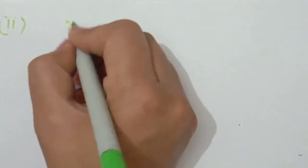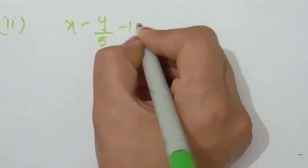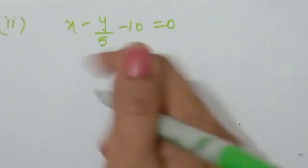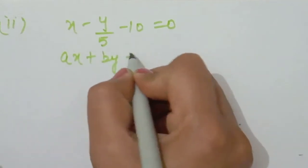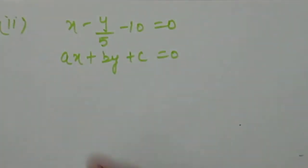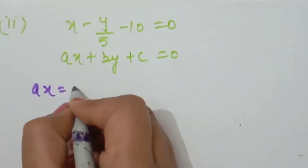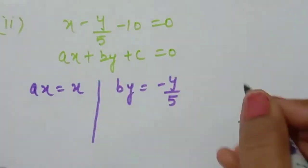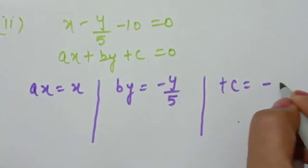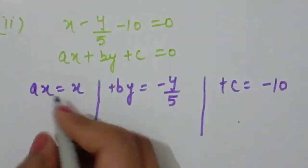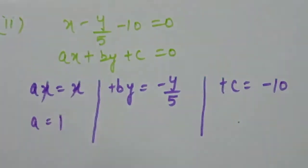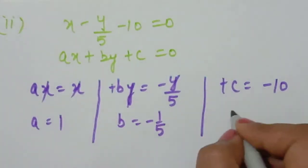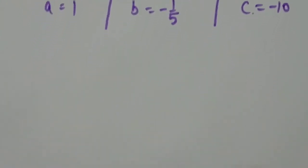For the second part, x − y/5 − 10 = 0, the equation is already in the general form. Comparing: ax = x gives a = 1; by = −y/5 gives b = −1/5; and c = −10.